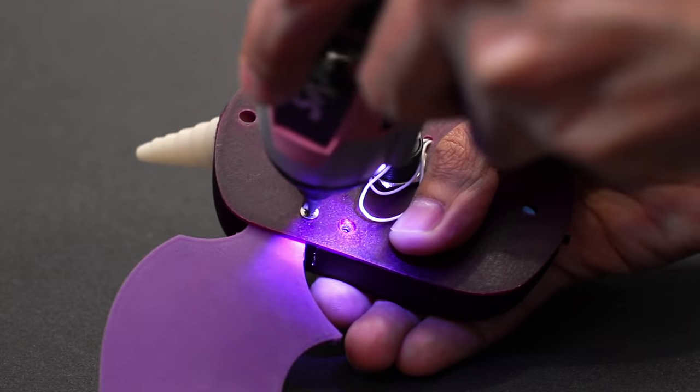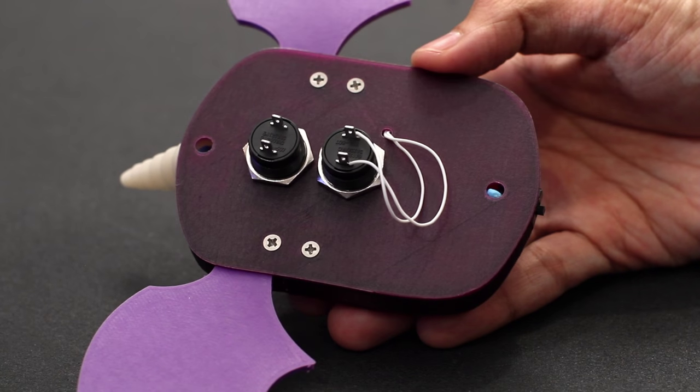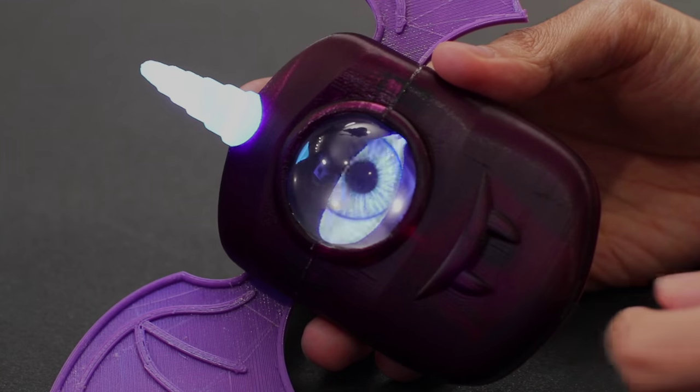Insert and fasten #4-40 screws to the back panel while holding the two parts together. And now we're ready to install the doorbell.